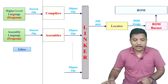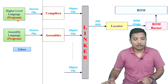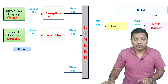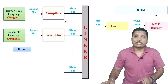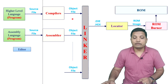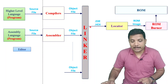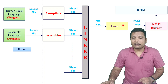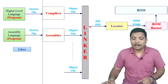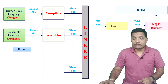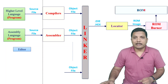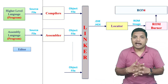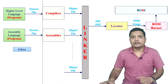So if you observe, the tools we need are: an editor to write the program, a compiler and assembler to generate object files, a linker to link object files and generate executable files, a locator to generate a ROM image from the .hex file, and a ROM burner to load the ROM image into ROM memory. Let us now look at each of these tools one by one.